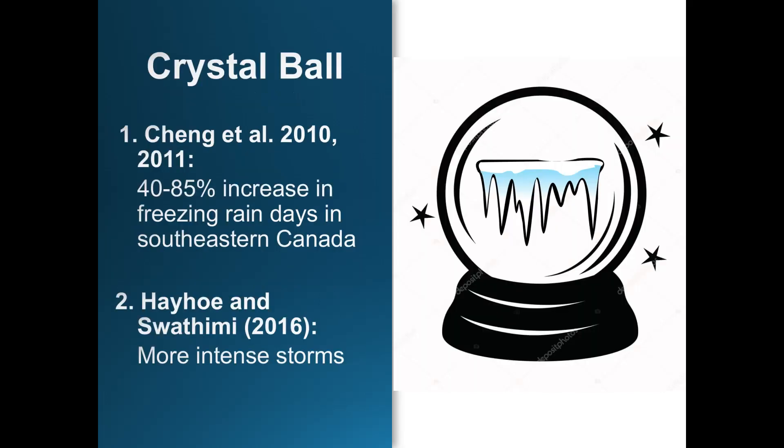Looking forward, we don't have a crystal ball, but we do have models. Two groups have modeled the future occurrence of ice storms. The first is Cheng and colleagues in 2010, who used statistical downscaling tools and projected a 40 to 85% increase in freezing rain events by the 2050s in South Central Canada. The second team is Hayhoe and Swathimi, part of our team, who used advanced machine learning algorithms and projected an increase in the intensity of ice storms in coming years here in the Northeast.